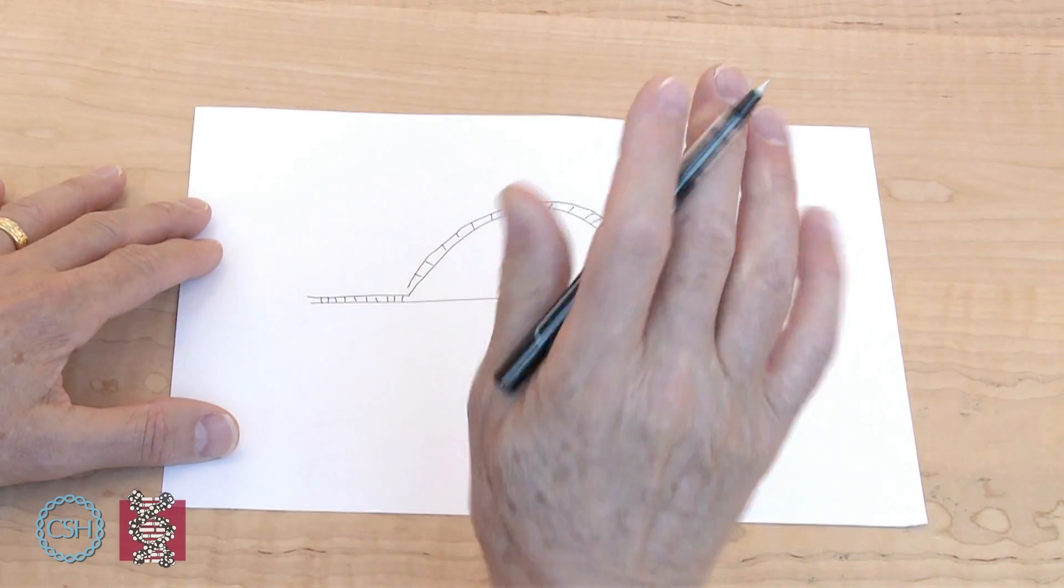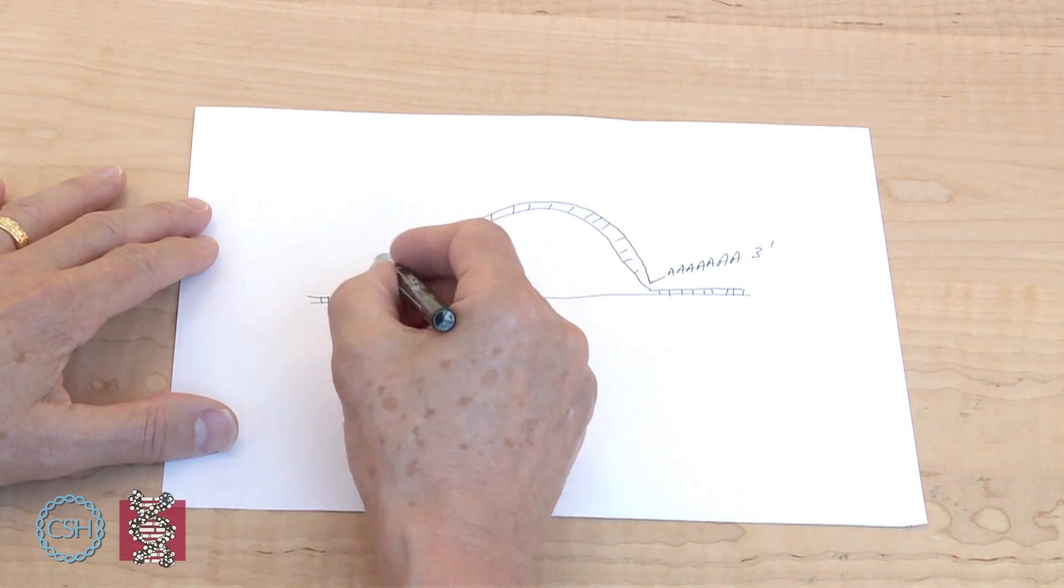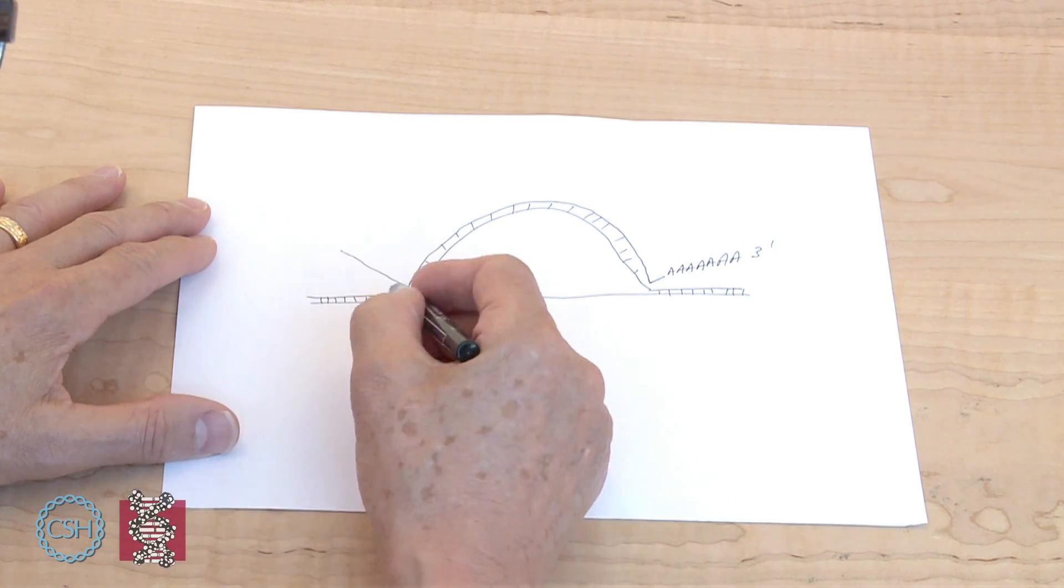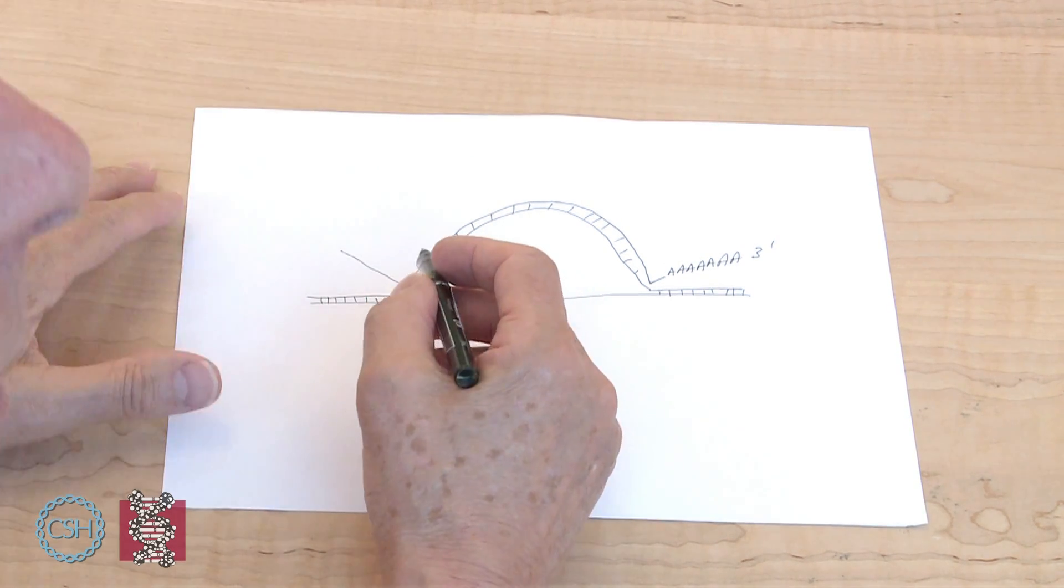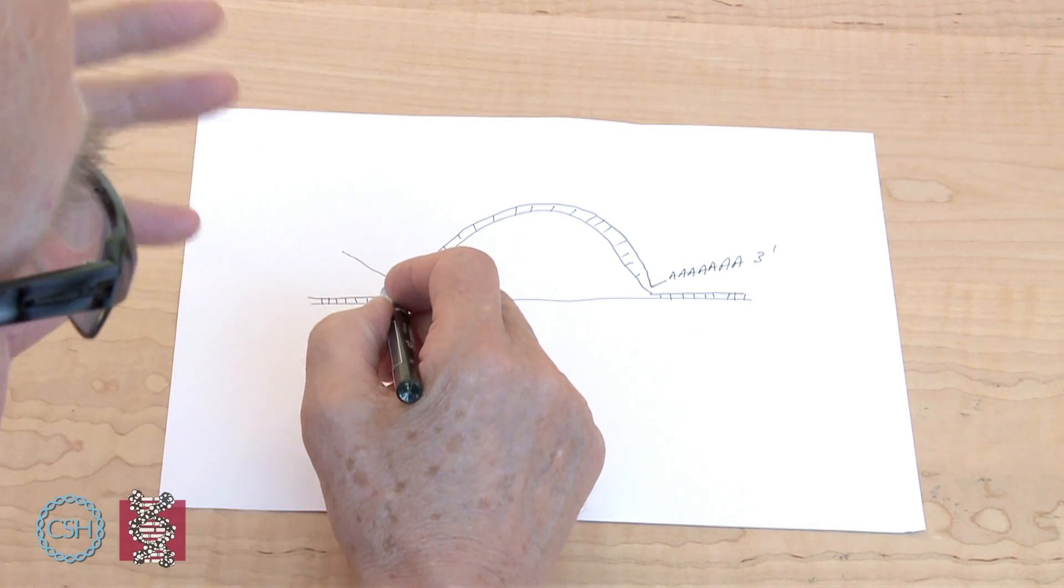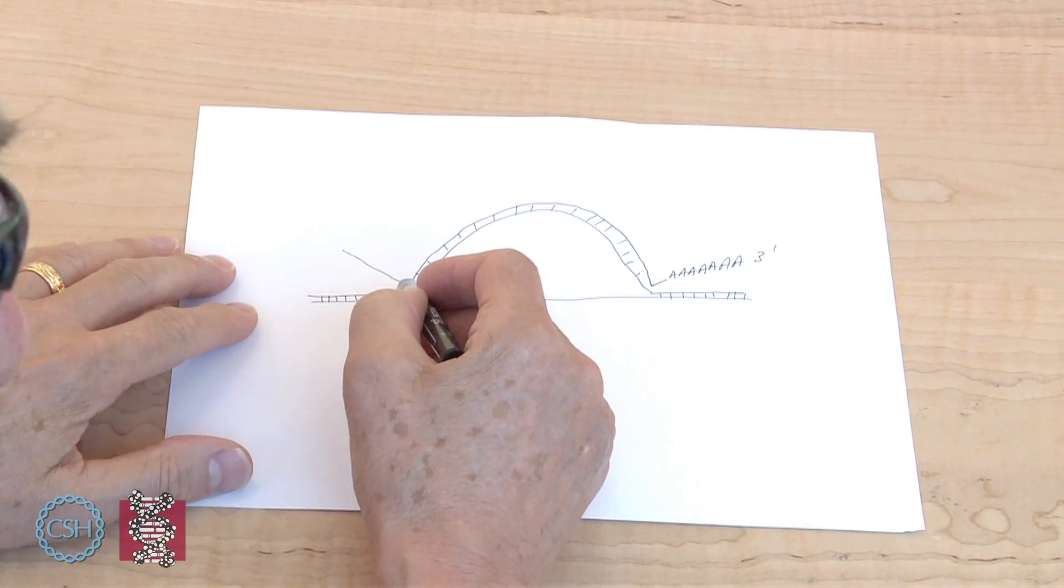And at the 5' end we had predicted that there should be a primer. There was going to be an extra piece of sequence that wouldn't match here but was coded somewhere else in the adenovirus genome. And I had a clue, I had an idea in my head, of where this was coded.